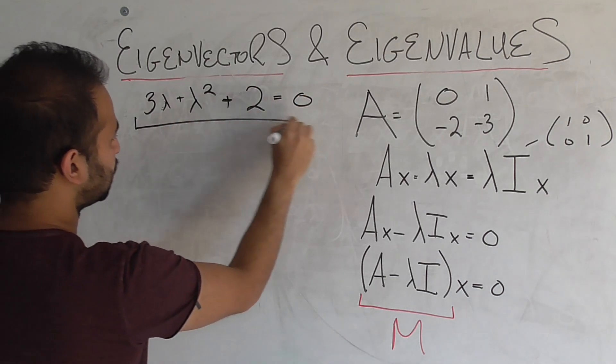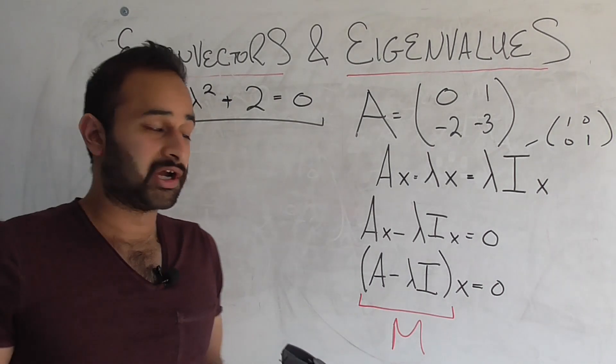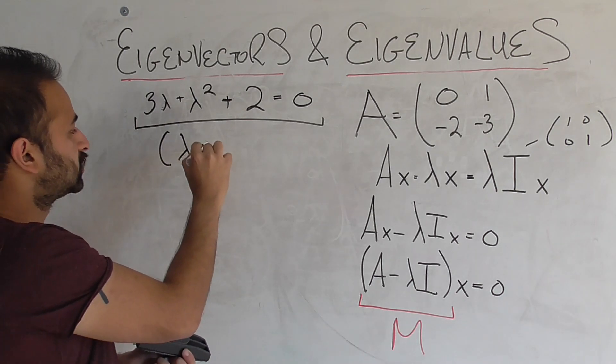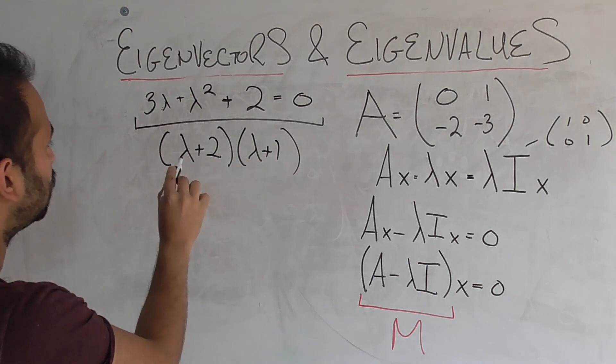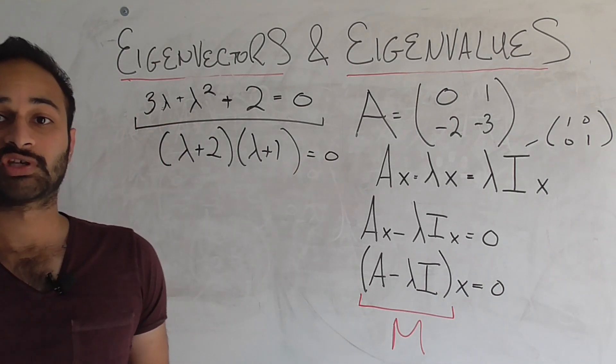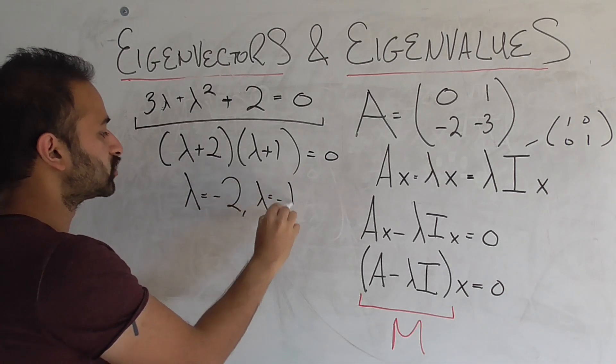This is just a nice polynomial equation, a quadratic equation. So we don't even have to use the quadratic formula in this case. Why? Because we know, we can just factor it. So we can do lambda plus 2, and lambda plus 1. Does that check out? Lambda squared, 2 lambda, that gives us 3 lambda. Yeah, that checks out. And we know that the roots of this polynomial equation are lambda equals minus 2, and lambda equals minus 1.